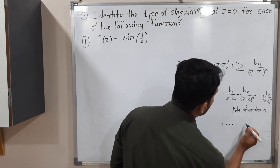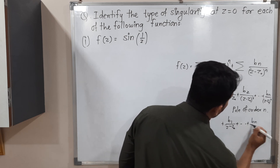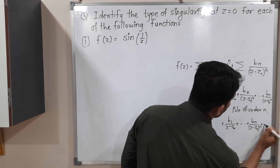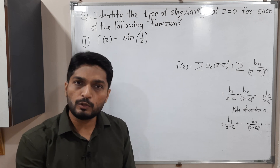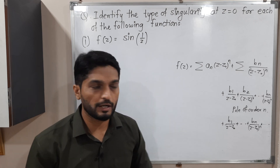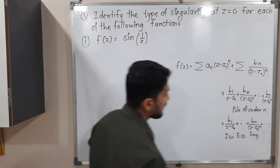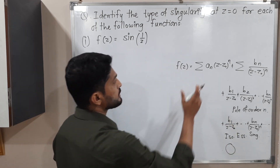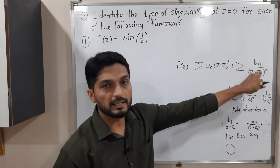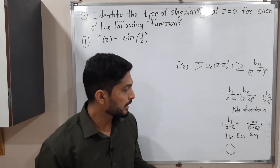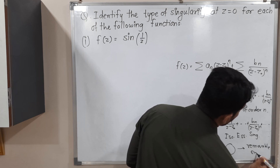If you have infinitely many terms — b_n upon (z minus z₀) raised to n, and we have infinitely many terms after b_n also — we call it an isolated essential singularity. Sometimes people call it simply essential singularity, but we say it is isolated essential singularity. And if the principal part is zero, that means the function has only an analytic part — we get a Taylor series, not a Laurent series. So if the principal part is zero, we say it is a removable singularity.